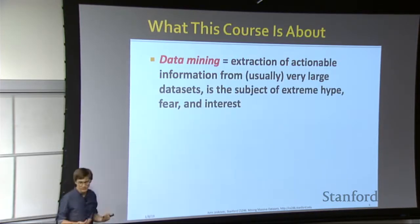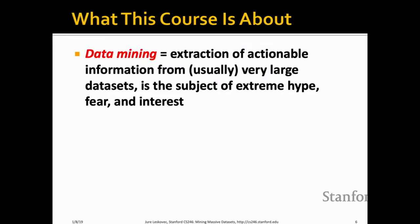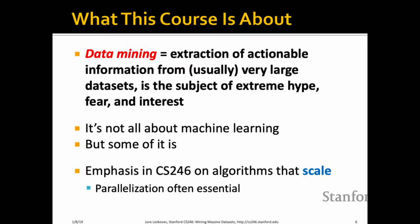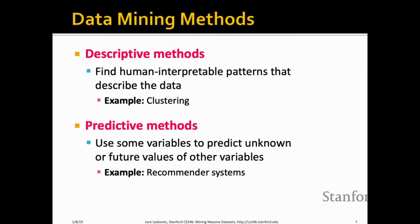So what do we want to do? We want to extract actionable information, usually from very large datasets. This today is subject to extreme hype, fear, and interest all at the same time. It's not all about machine learning, but a lot of it is — there is much more to it. The emphasis is on the scale. Even the latest revolution in machine learning and deep learning is a consequence of having large amounts of data and compute. We are finally able to train models on large amounts of data and really feed the entire distribution.